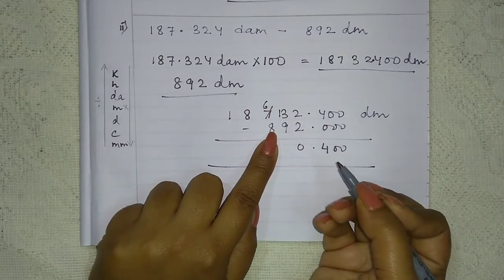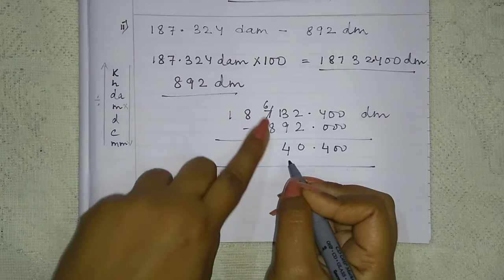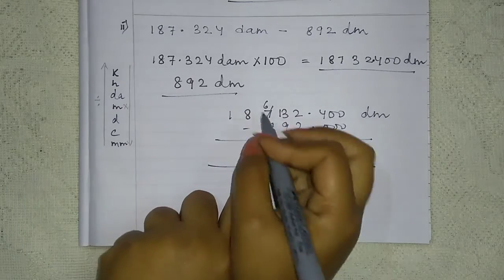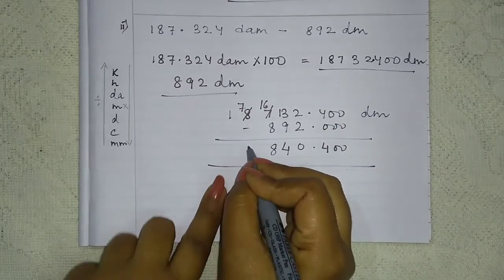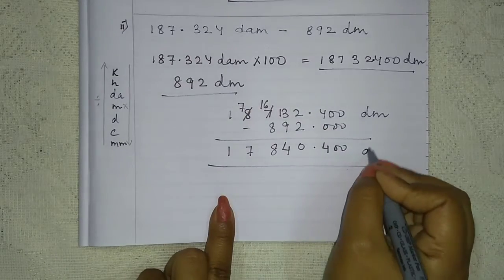13 minus 9 is 4. 6 minus 8, no. Again borrow. Now 16 minus 8 is 8.